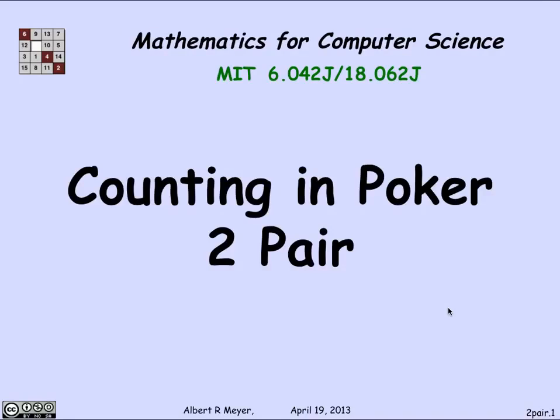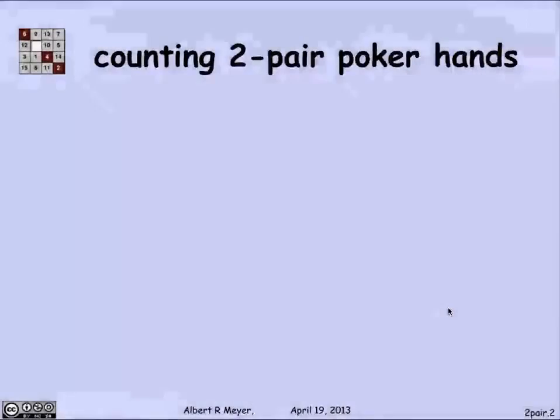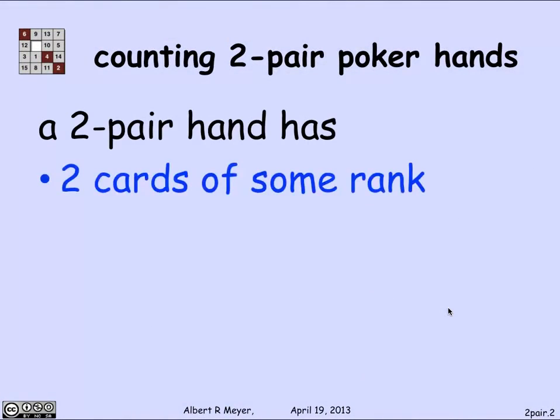Poker is a game where each player is dealt five cards from a deck of 52 cards. The definition of a two-pair hand is that there are two cards of some rank. The ranks are ace, deuce, up through king — so there are 13 possible ranks.